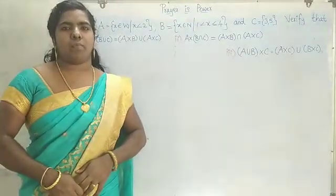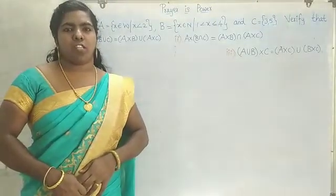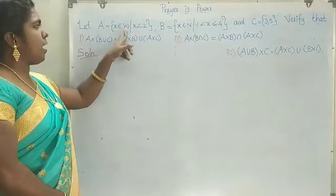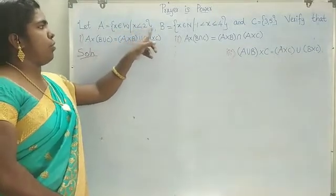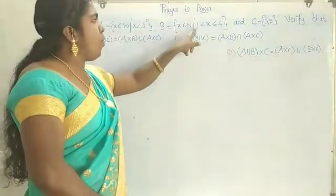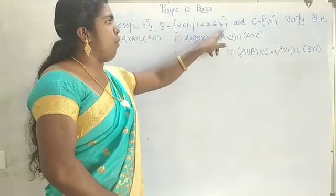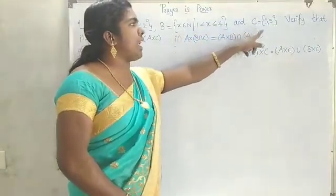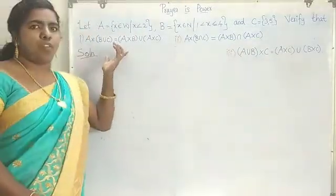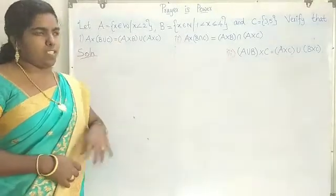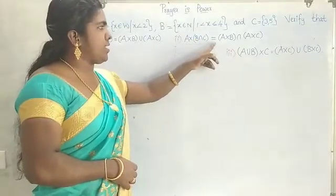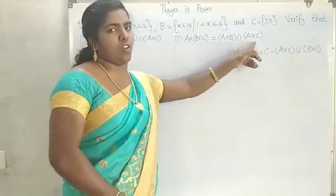Hi everyone, welcome to our math solving. Today we solve one problem. Let A be the set of X belonging to W such that X is less than 2. B is the set of X belonging to N such that 1 is less than X less than or equal to 4. And C is equal to {3, 5}. We need to verify that A cross (B intersection C) equals (A cross B) intersection (A cross C). The first question was solved in the previous episode — please watch it. Now we are going to solve the second question.